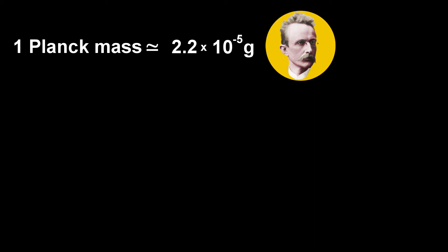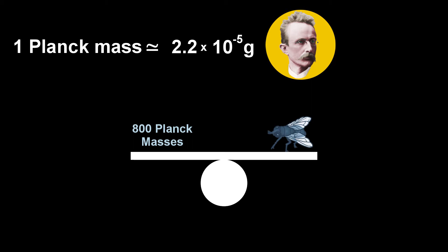One unit of Planck mass is small, about 20 micrograms. You'd need about 800 Planck masses to balance a housefly.